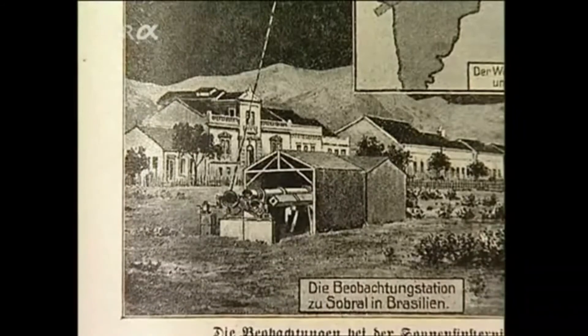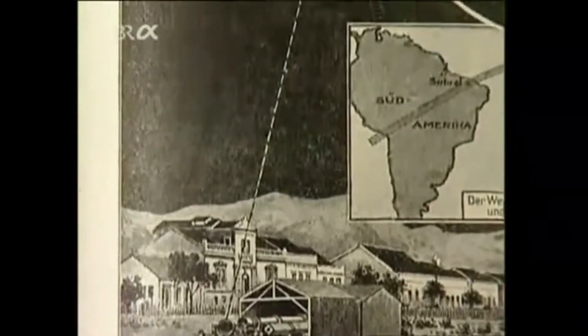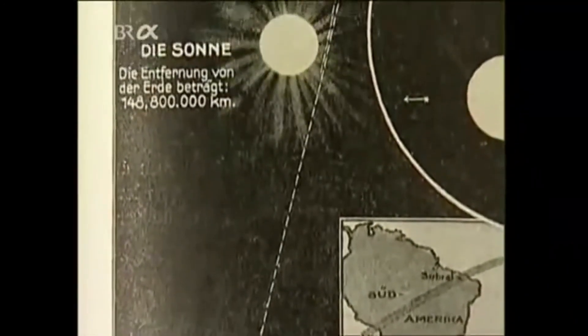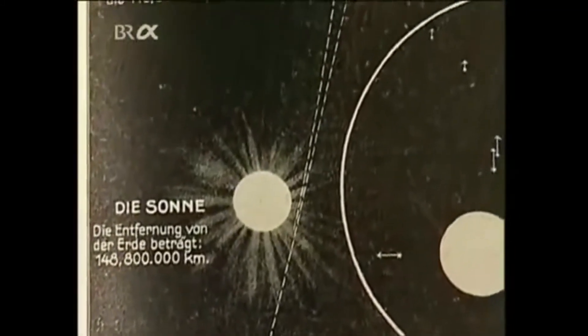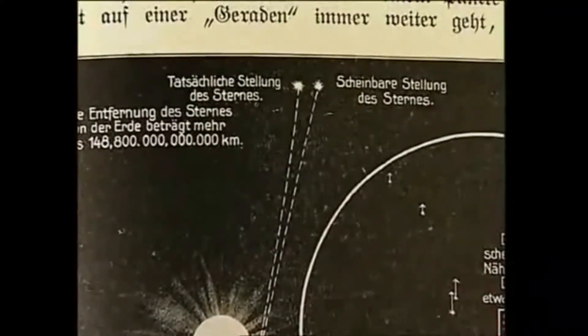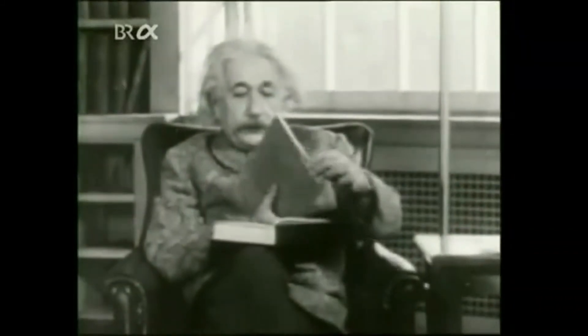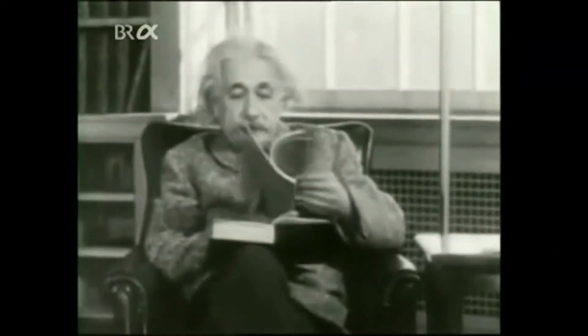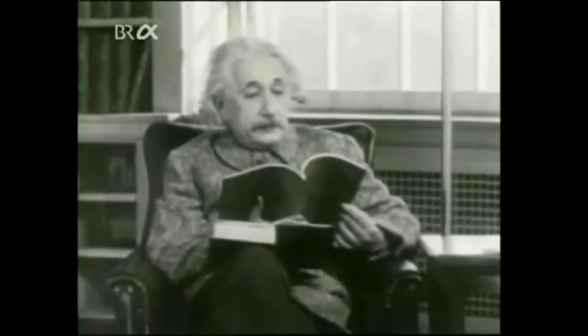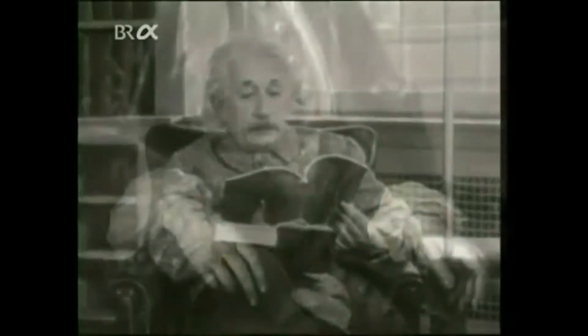Einstein's theory was confirmed just a year after publication. During the 1919 solar eclipse, astronomers observed a distant star close to the Sun and, as Einstein had predicted, its light was deflected by the Sun's gravity. However, the changes Einstein made to Newton's theory only come into play on a cosmic scale, with strong gravitational fields and high velocities — for everyday purposes, Newton's law of gravity is entirely adequate.